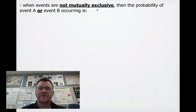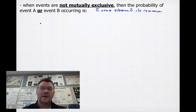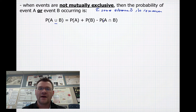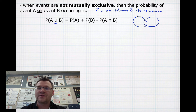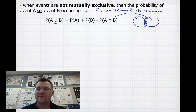When events are not mutually exclusive — meaning there are some elements in common — the probability of event A or event B occurring is: probability of A plus probability of B minus the probability of A and B occurring. If you remember your Venn diagrams, which you need to know for this unit, the area in common between the two circles is the probability of A and B occurring. We subtract that because otherwise we would have counted that overlapping area twice.